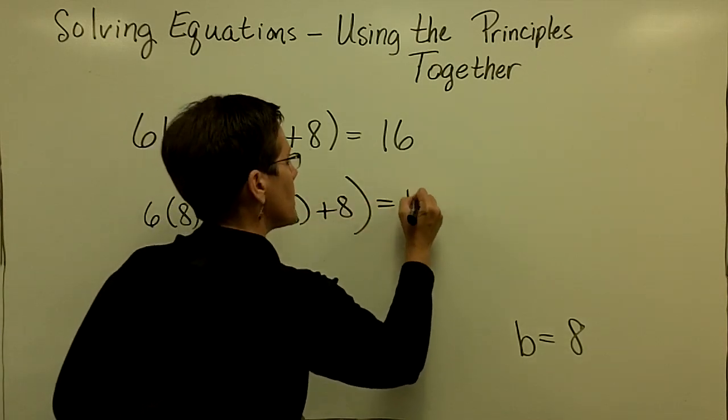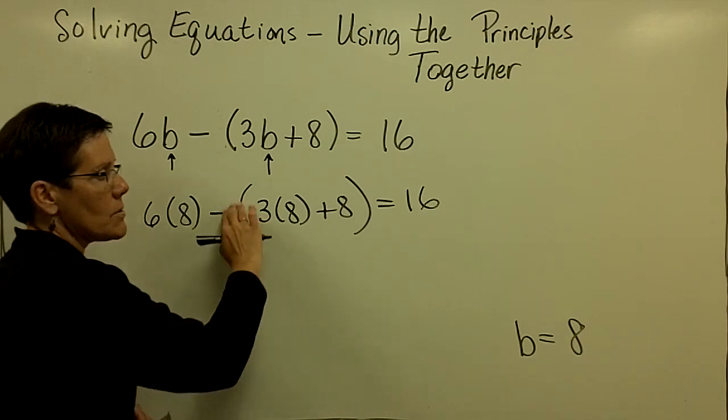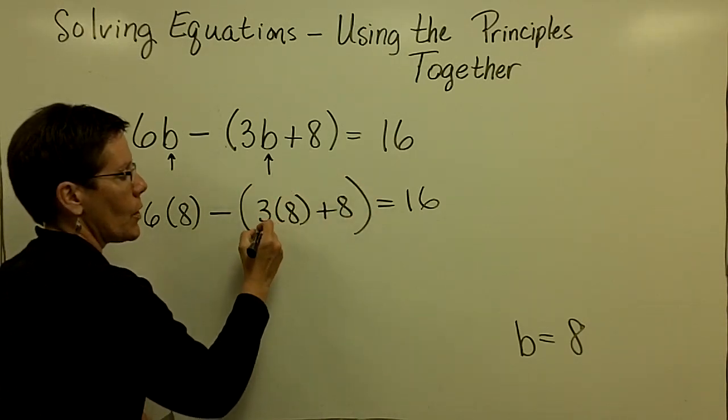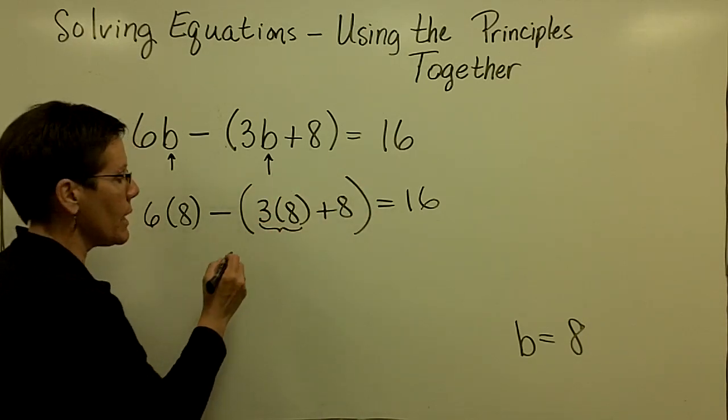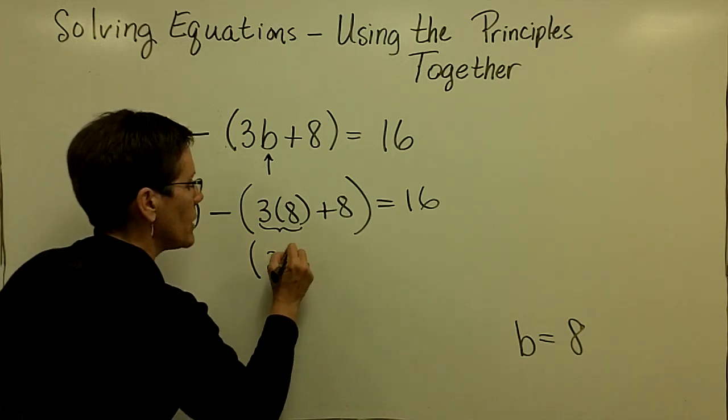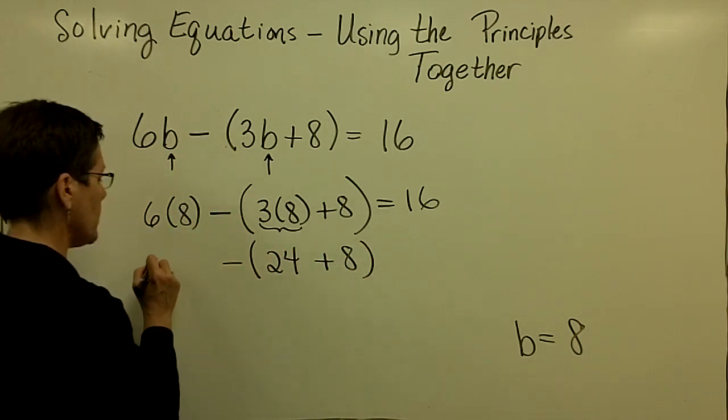Plus that 8. And then close those parentheses. So order of operations says do what's in these parentheses. And within those, I need to multiply first. So 24 plus 8 will be 32 here in a minute.